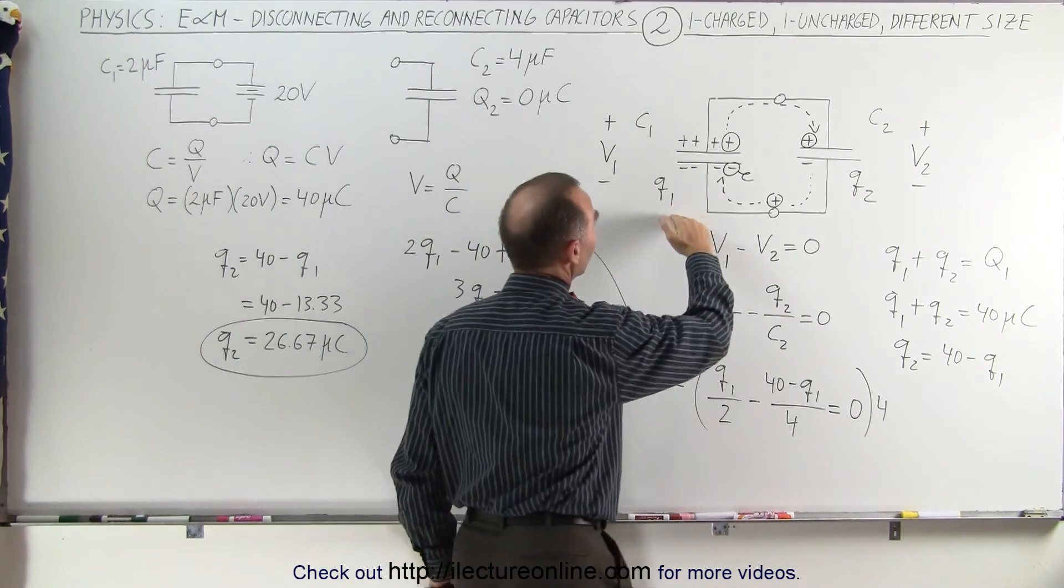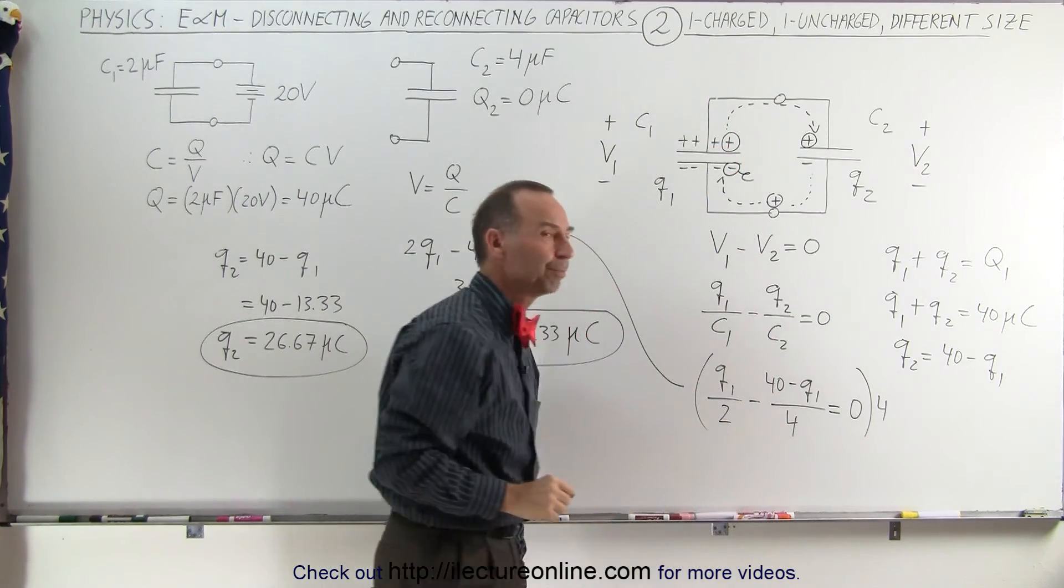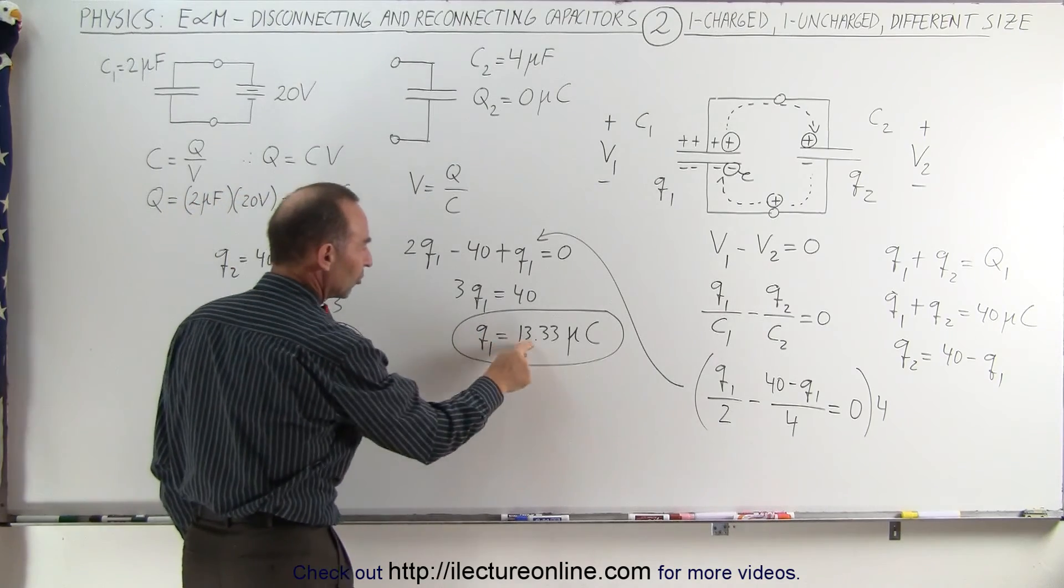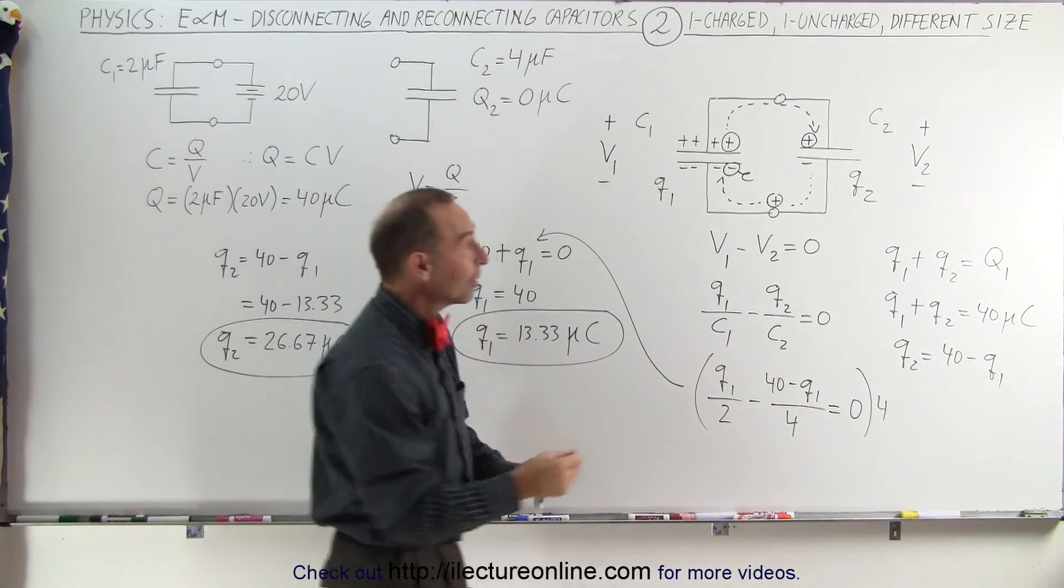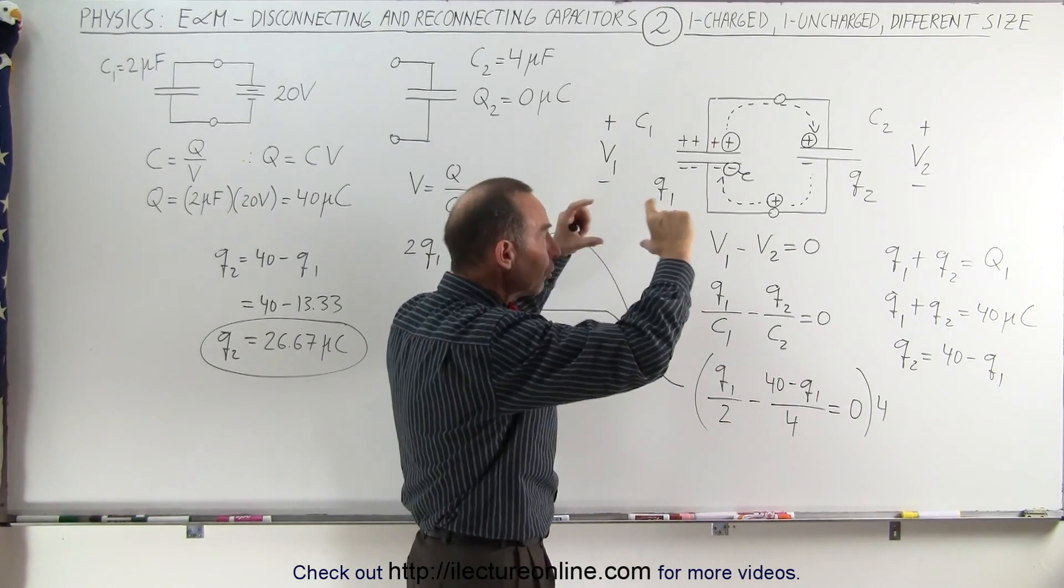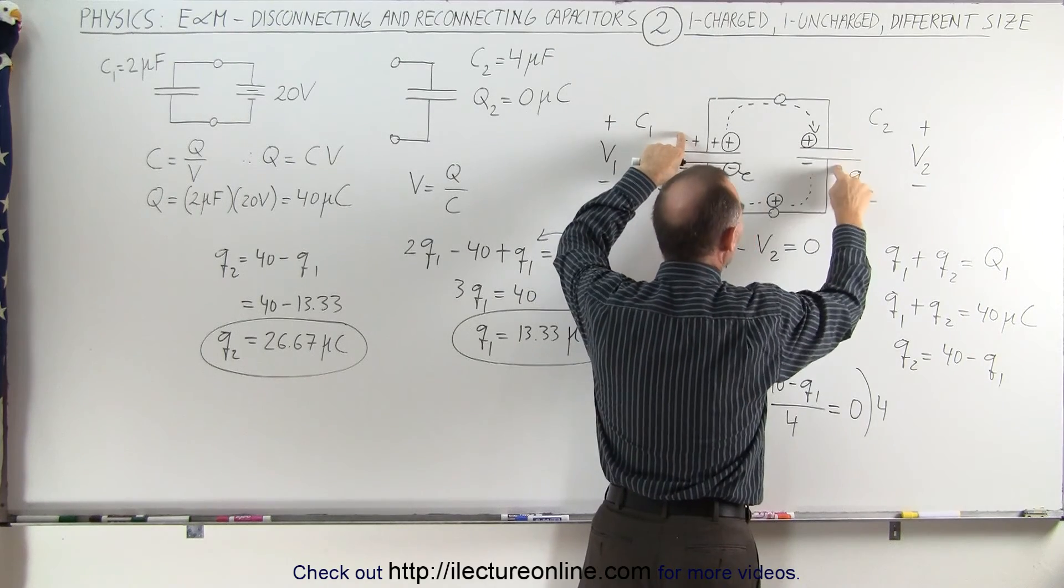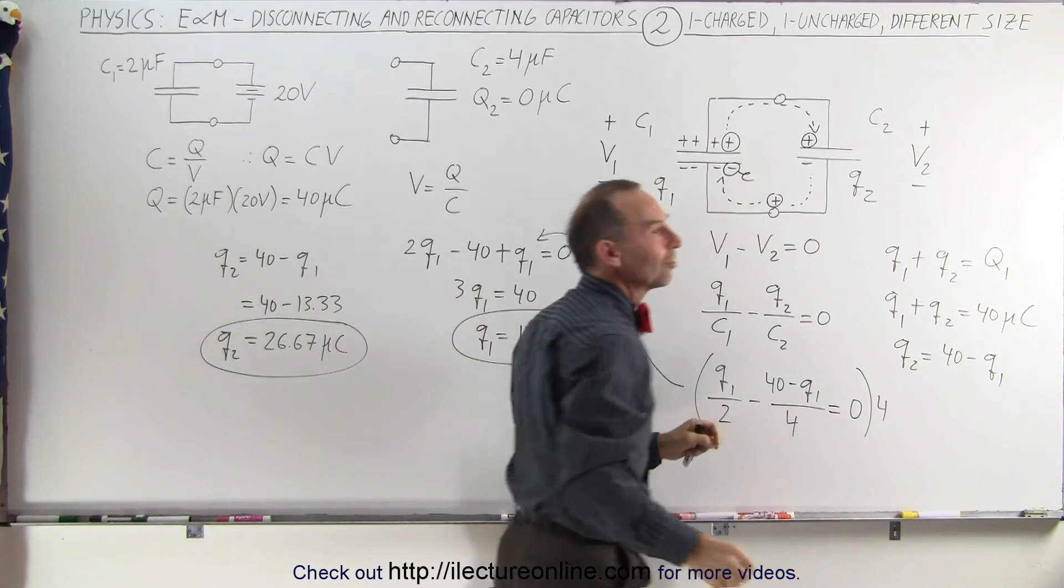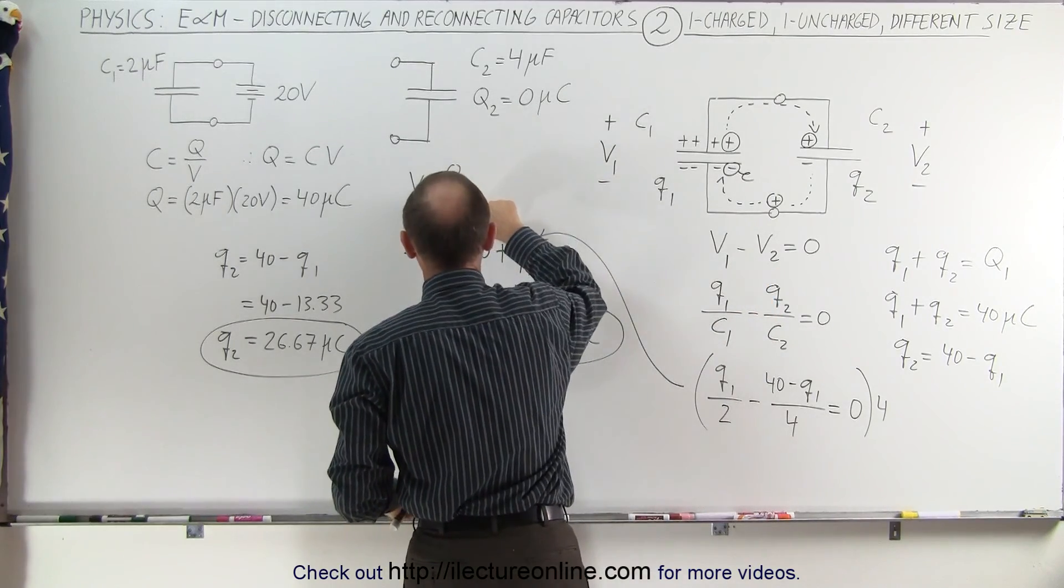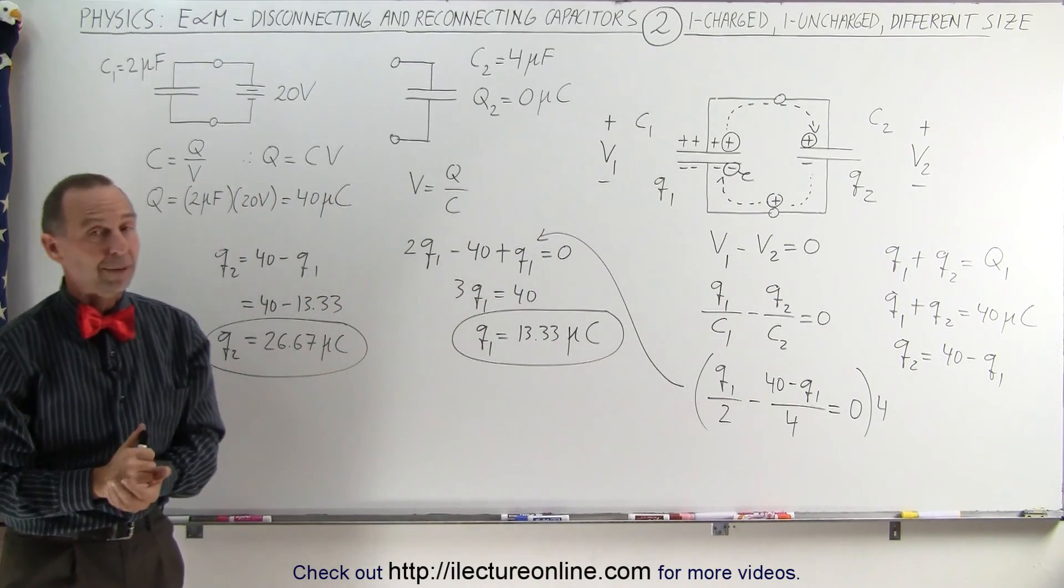Two-thirds of that charge went to the second capacitor, and one-third remain on the first capacitor. Now that makes sense, because this quantity is exactly twice the amount of charge as this one. Since the second capacitor is twice as big, it has twice the capacitance for the same voltage across these capacitors. This capacitor can hold twice as much charge because it has twice the capacitance. And so the ratio, the ratio of charge to capacitance will be the same on both capacitors. And that's how we solve a problem like that.